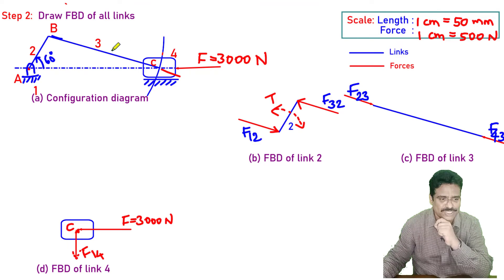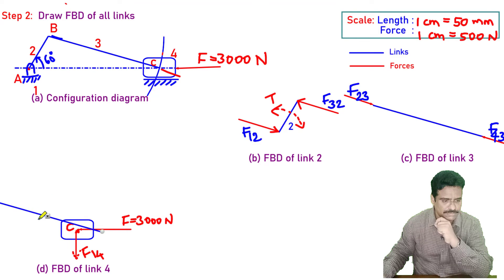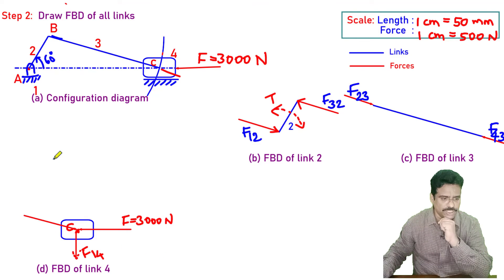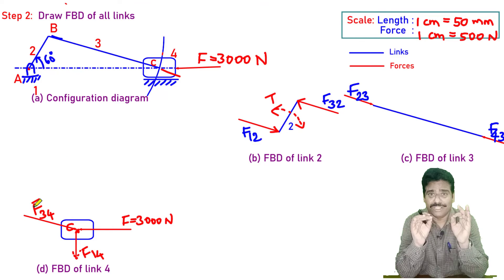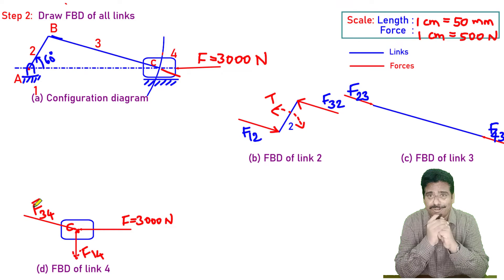How can I do? We have to, of course, draw a parallel line. What is the name? This is F34. Yes, we have drawn free body diagram of all the three links now.